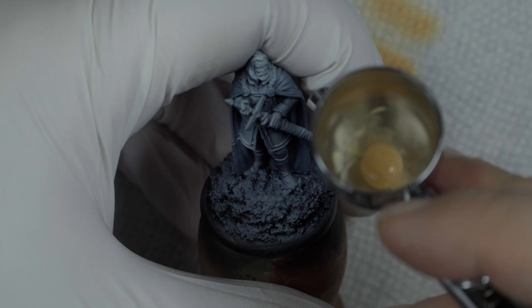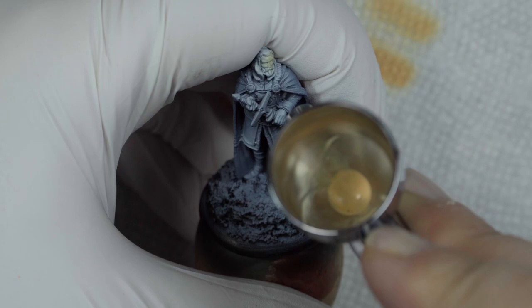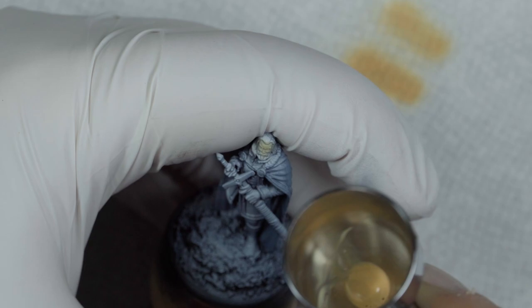They say the definition of insanity is doing the same thing and expecting a different result. Well that pretty much sums up my relationship with this flesh tint ink from Daylor Rowney. You should skip this step if you're following along, and base coat Eddard's skin however you normally would. Yes, this is foreshadowing.